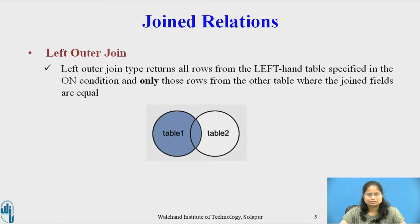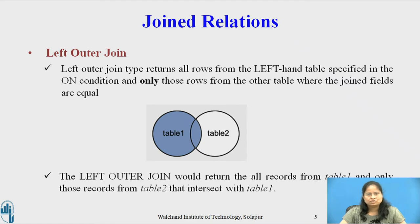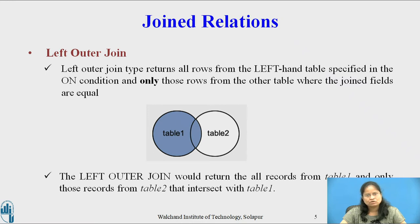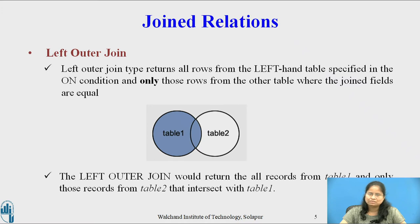Now consider left outer join. The left outer join returns all the rows from the left-hand side relation specified in the condition and only those rows from the other table where the join fields are equal. It returns all records from table 1 and only those records from table 2 that intersect with table 1. The left outer join takes all tuples in the left relation that did not match with any tuple in the right relation, pairs them with null values for all other attributes from the right-hand side relation, and adds them to the result of the natural join. All information from the left-hand side relation is present in the result.